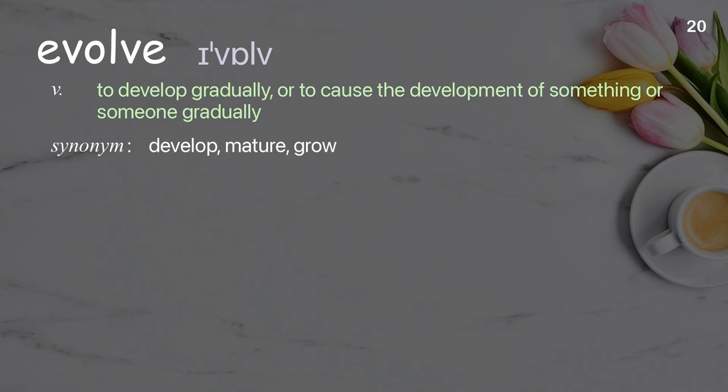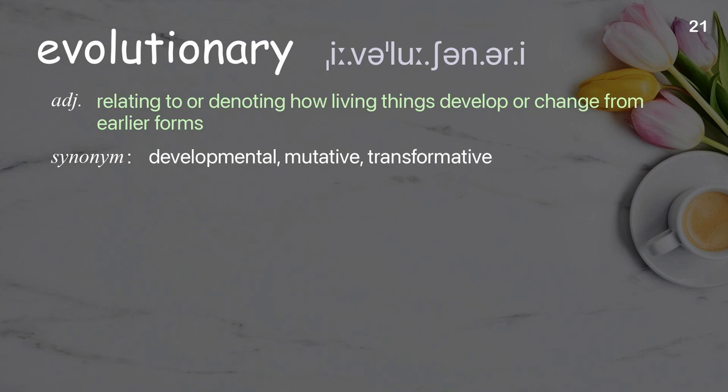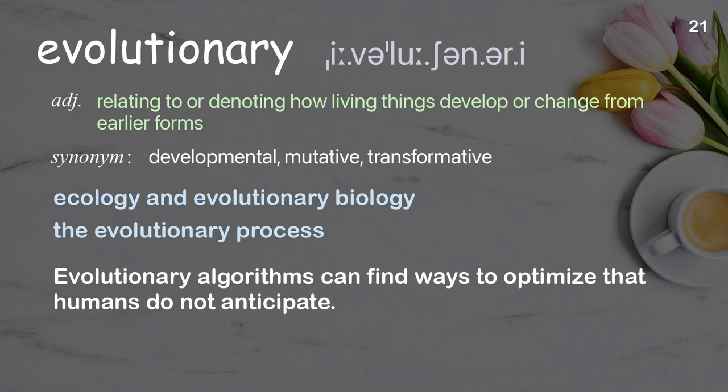Evolve: to develop gradually, or to cause the development of something or someone gradually. Examples: evolve over the past decade. Eyeless fish evolved in dark caves. Evolutionary: relating to or denoting how living things develop or change from earlier forms. Examples: ecology and evolutionary biology, the evolutionary process. Evolutionary algorithms can find ways to optimize that humans do not anticipate.